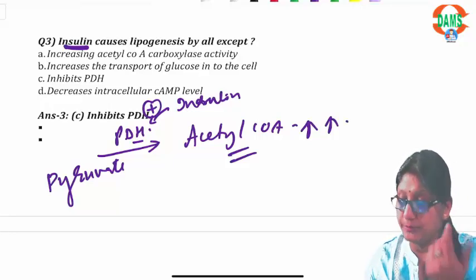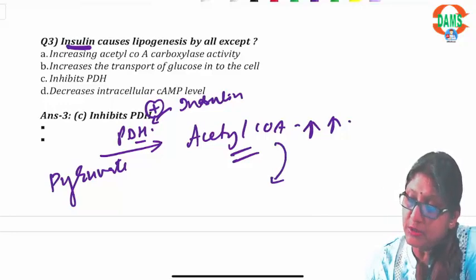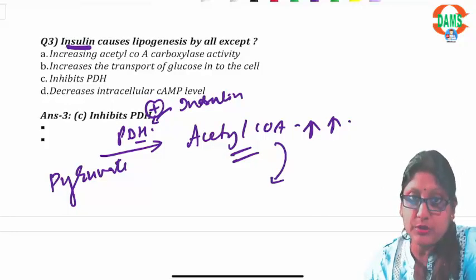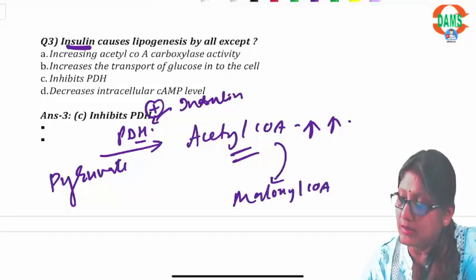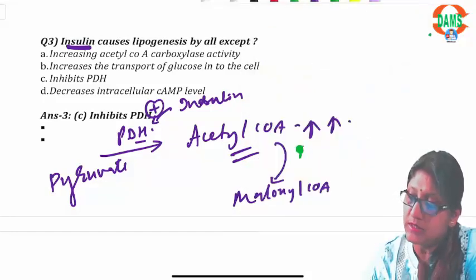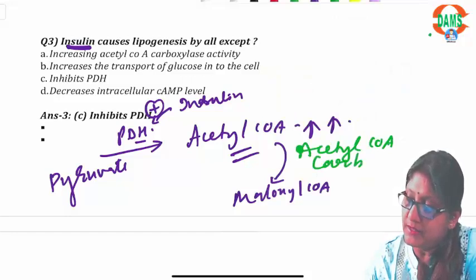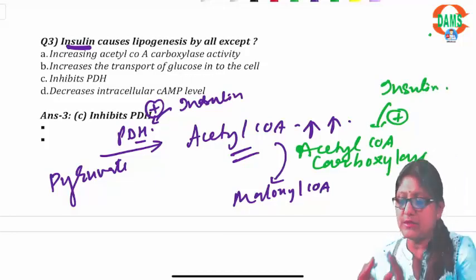Additionally, when fatty acids are to be produced, acetyl-CoA is converted to malonyl-CoA by acetyl-CoA carboxylase, which is the rate-limiting enzyme for fatty acid synthesis. Insulin activates it via dephosphorylation.